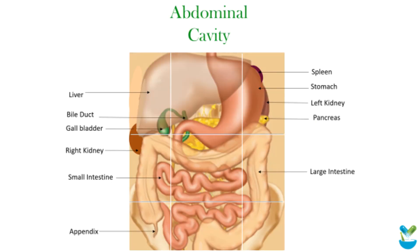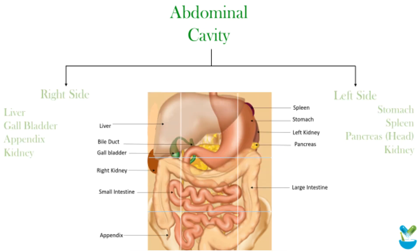The abdominal cavity, which is in between the thoracic and pelvic cavity, comprises the liver — the largest organ of the body — the gallbladder, a small gland that releases bile, and the appendix, a blind finger-like projection. All three of these organs are present on the right-hand side in the abdomen.